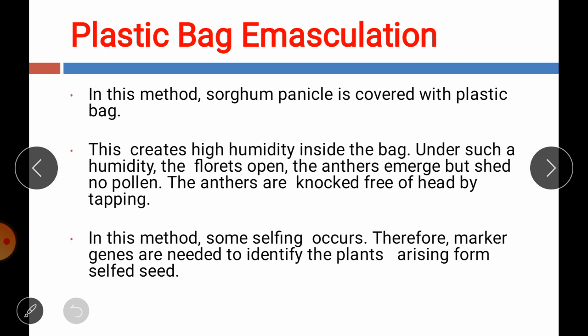In the plastic bag emasculation method, the panicle is covered with a plastic bag, creating high humidity inside. This causes florets to open and anthers to emerge but shed no pollen. After knocking or tapping, the anthers fall inside the bag, which is then removed, completing emasculation. However, there are chances of selfing with this method, so proper care should be taken.